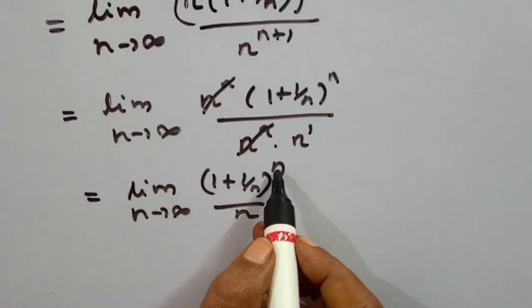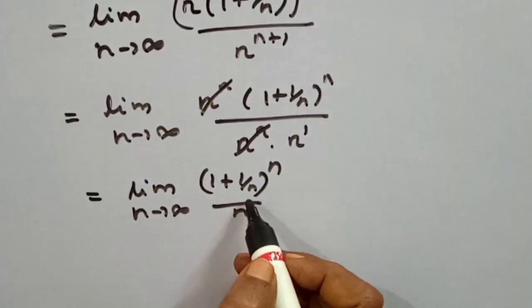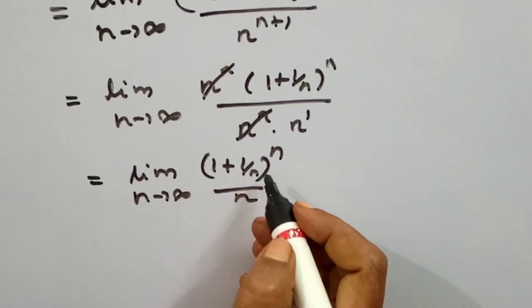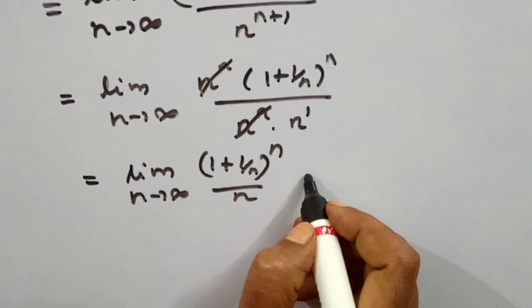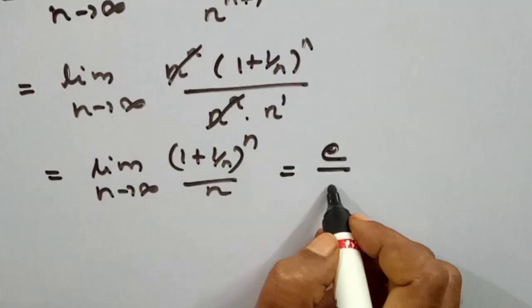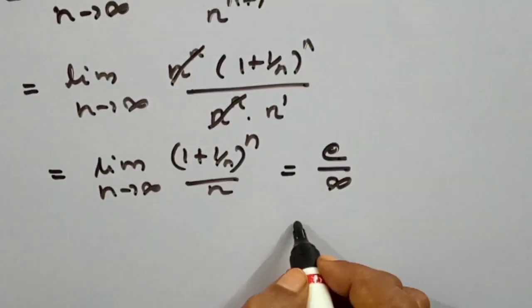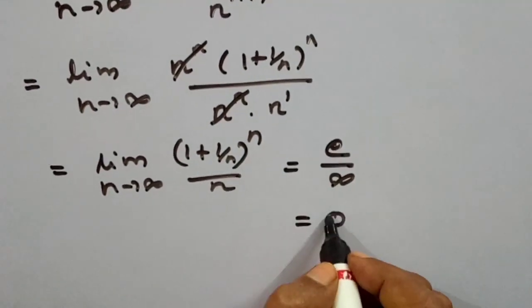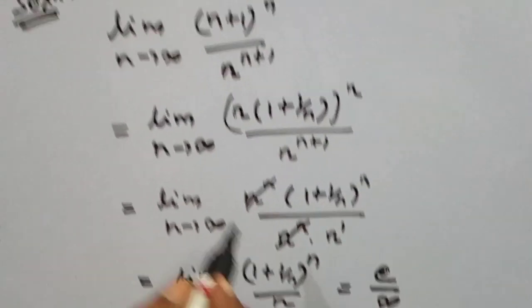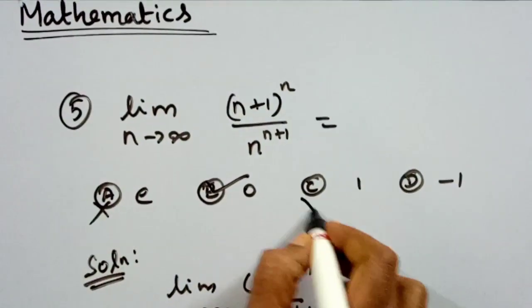The numerator (1 plus 1 by n) to the power n equals e, as seen in the previous problem. The denominator is n tending to infinity. So the limit equals e divided by infinity, which equals 0. The answer is 0, option B is correct.